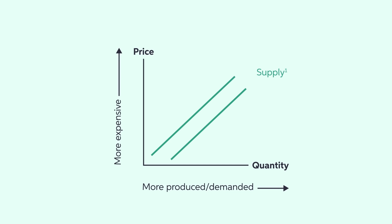Sometimes, the supply curve can have a parallel shift. As you can see, as the supply curve moves to the right and quantity Q moves from Q to Q prime, more quantity is being produced. Several factors can influence the supply curve. At the most basic level, the parallel shift in the supply curve usually represents a fundamental change in production. Conversely, the supply curve can also shift to the left, which means that production is costlier if moved in the other direction.